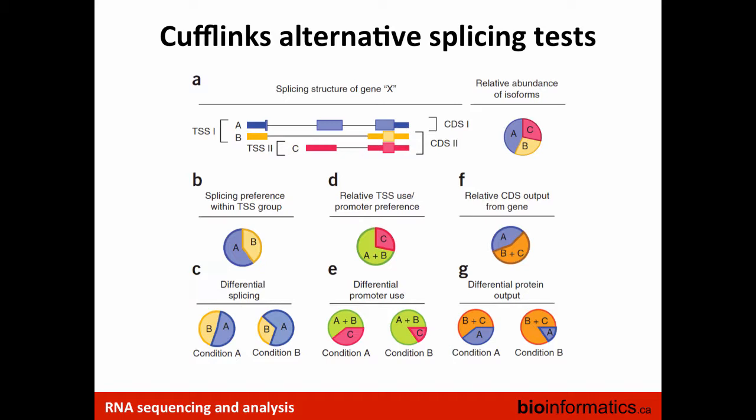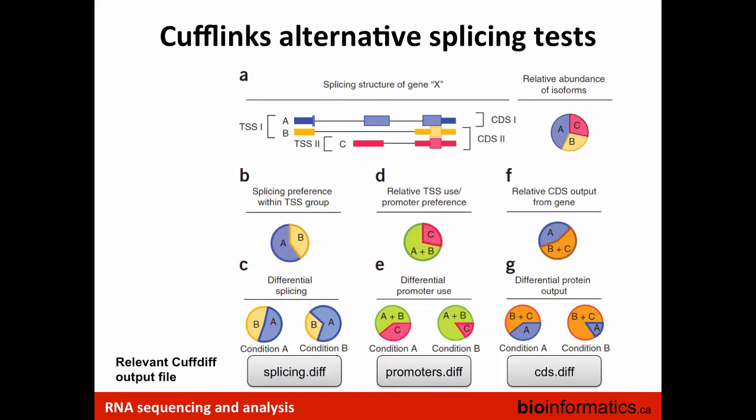Cufflinks automatically does those three comparisons: a splicing-level comparison focusing on exon usage, a promoter-level comparison looking at different transcript start site usages, and a coding sequence comparison looking at the usage of different coding sequences. Each of those tests gives three output files, and the differential expression results in each file corresponds to these three ways of thinking about alternative expression: splicing analysis, promoter analysis, and CDS analysis.